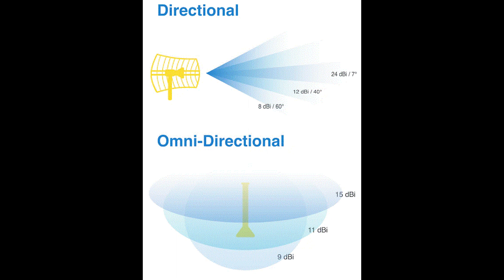And in terms of performance, the general rule is that for every three decibels of gain added, it doubles an antenna's effective power output.